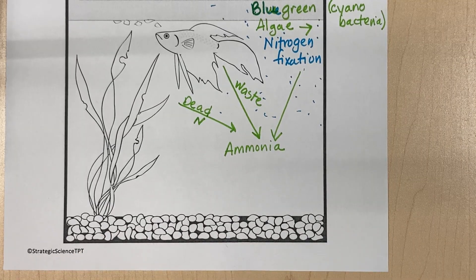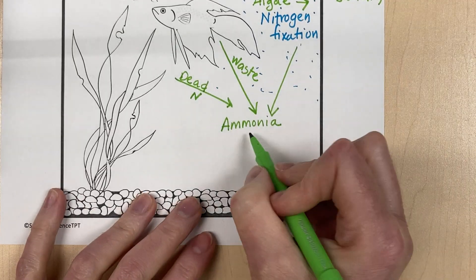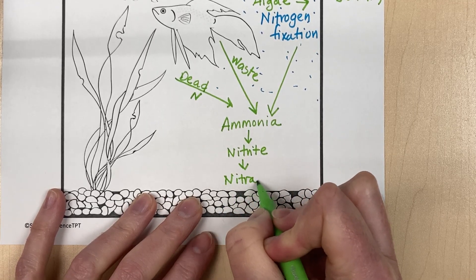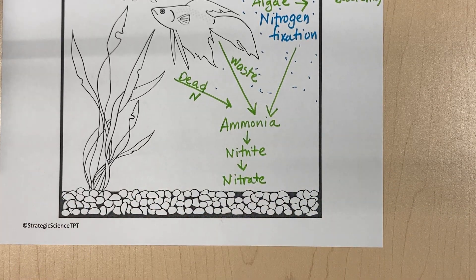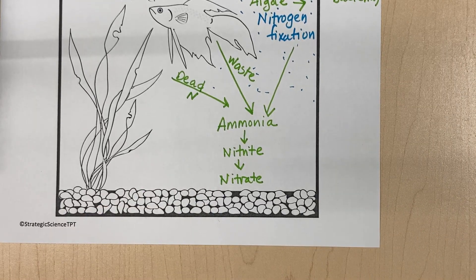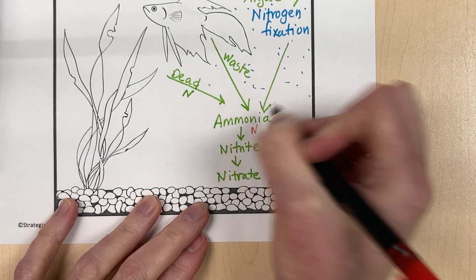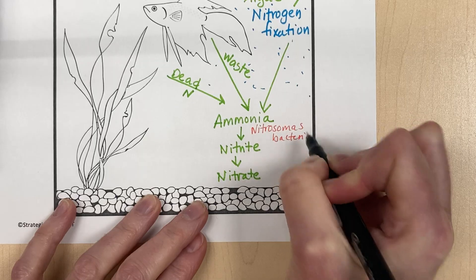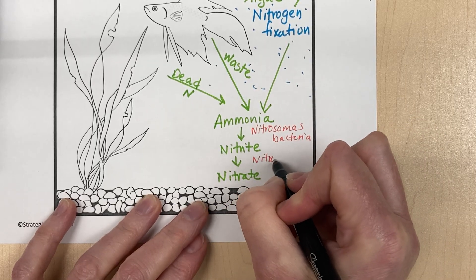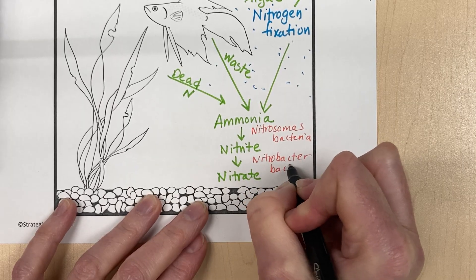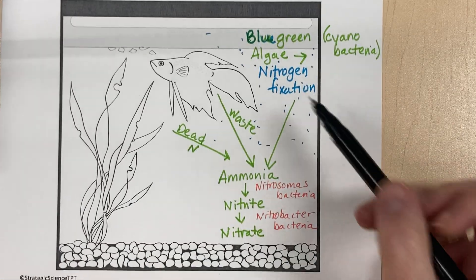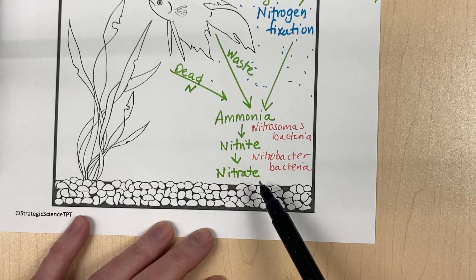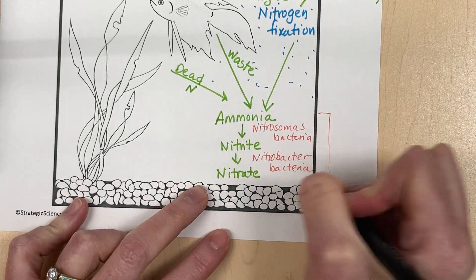In the water, you want nitrifying bacteria to go from ammonia to nitrite and nitrate, just like on land. The specific bacteria that convert ammonia to nitrite are called Nitrosomonas bacteria, and from nitrite to nitrate is called Nitrobacter bacteria. So up here you have nitrogen-fixing bacteria through blue-green algae, and then you have nitrification performed by these two types of nitrifying bacteria.